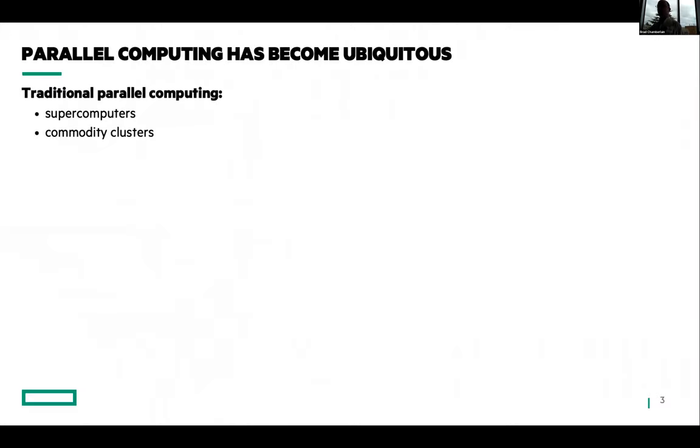So starting by stating the obvious: parallel computing has become ubiquitous. When I was here in grad school, if you wanted to do parallel computing, you had to have access to a supercomputer or maybe you'd build a commodity cluster. Of course nowadays, parallelism is falling from the sky. Pretty much any system you buy is going to have a multicore processor and probably a GPU. If you need something bigger, cloud computing is happy to sell you cycles that you can run on something that's a lot like a supercomputer or a commodity cluster.